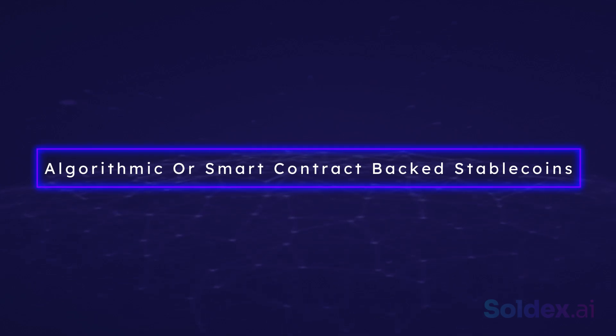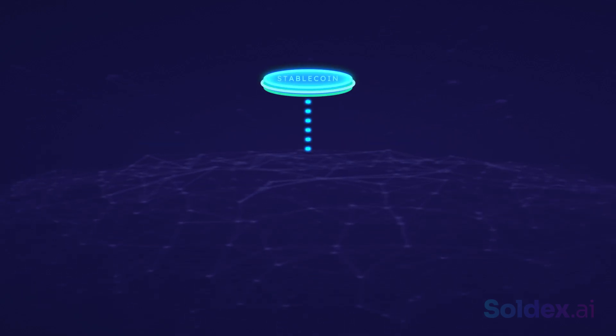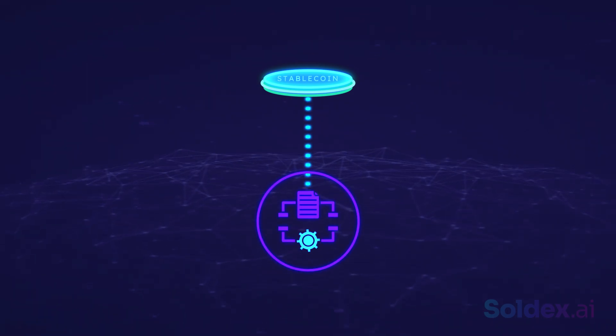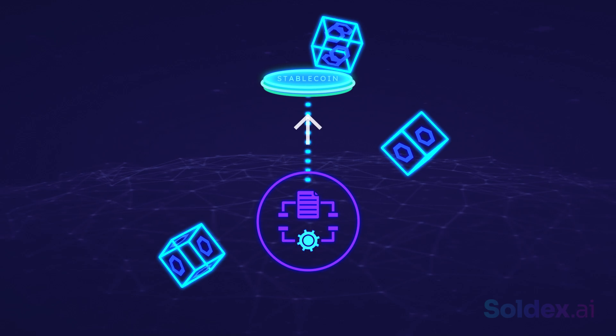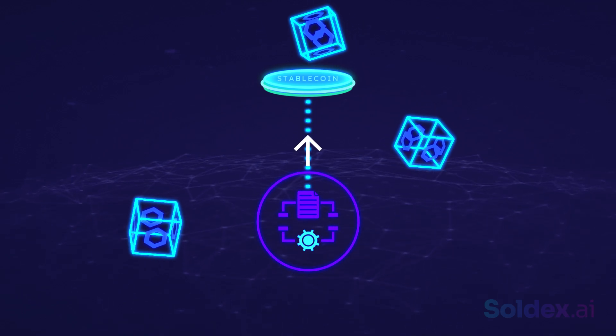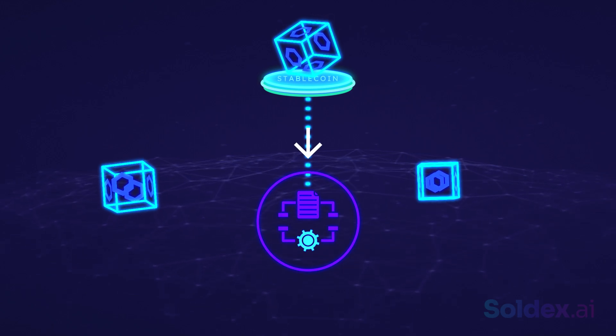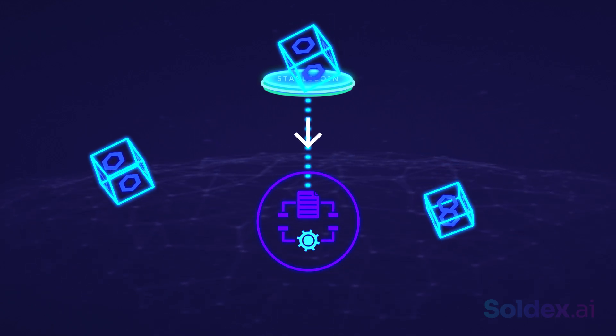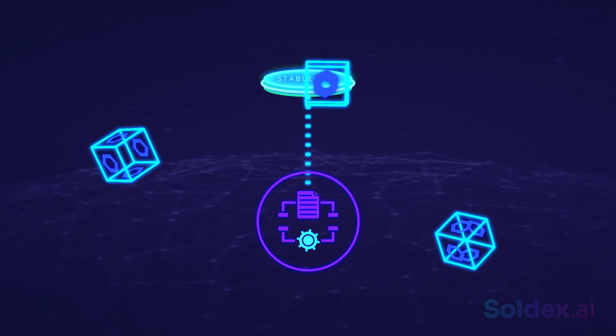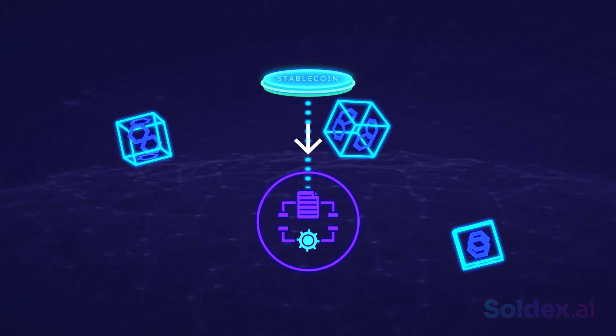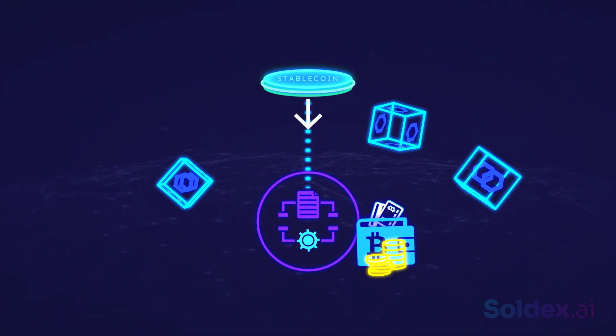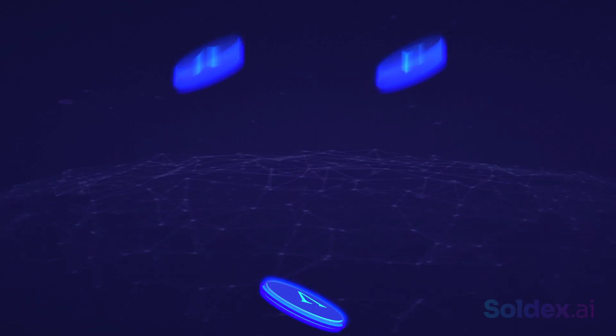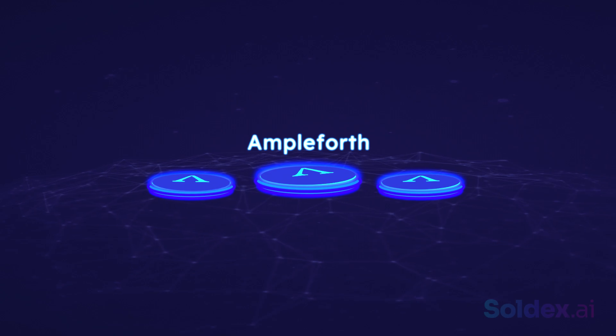Algorithmic or smart contract-backed stablecoins: These stablecoins are not backed by any underlying asset. Instead, they're controlled by smart contracts. The smart contracts use oracles to monitor the price of a stablecoin on different exchanges. When the price goes up above desired value, an algorithm will supply more tokens. And when the price goes down, an algorithm will sell tokens. This ensures that the value of the stablecoin remains the same. Because the number of tokens in circulation is continually changing, the number of tokens in your wallet will change, but the value will always remain the same. An example of smart contract-backed stablecoins is Ampleforth.